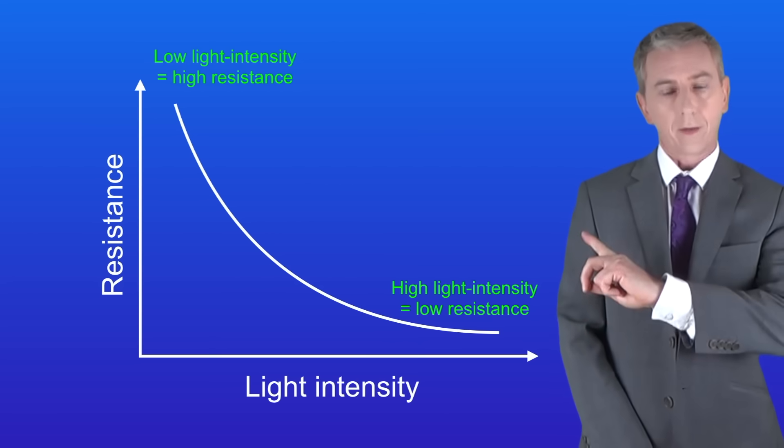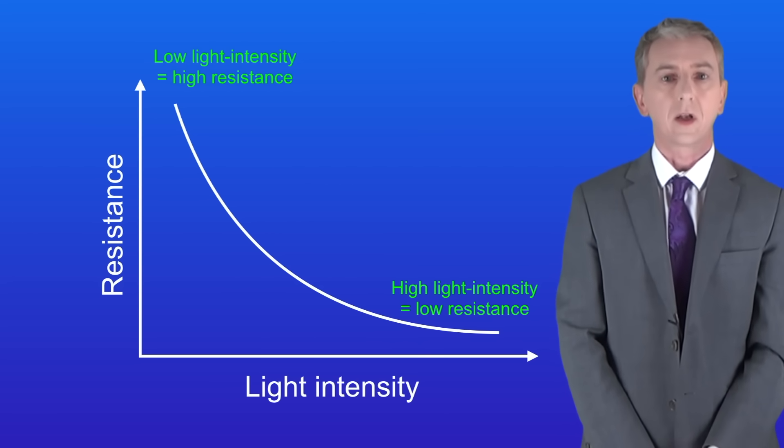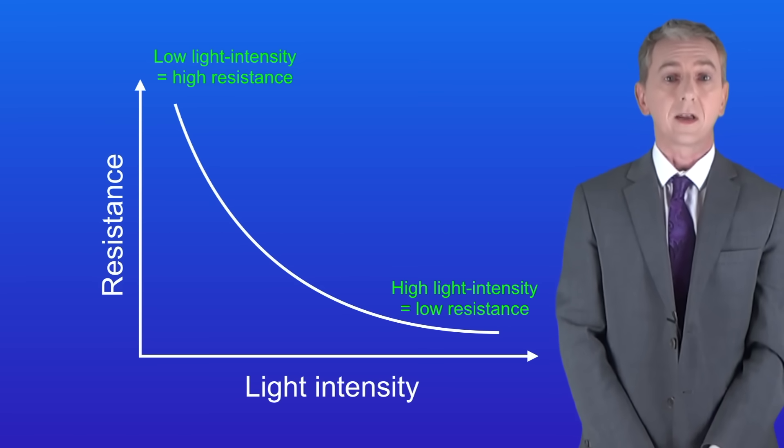I'm showing you that on this graph. As you can see we've got a high resistance when the light intensity is low, in other words in the dark, and a low resistance when the light intensity is high.